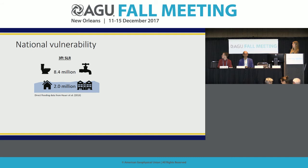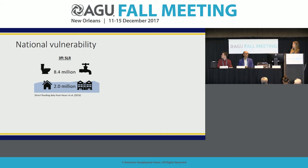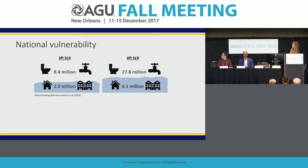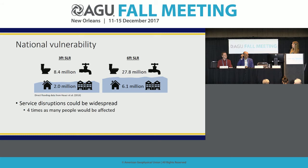We also wanted to compare the magnitude of these risks with other studies. We compared our estimates of people who would lose access to wastewater services with previous estimates from Hauer et al. of people who would experience flooding of their homes. For three feet of sea level rise, about two million people are living in the flood zone, but over four times as many — 8.4 million people — would experience a loss of wastewater services. At six feet, about six million would be in the flood zone, but 27.8 million could lose wastewater services.